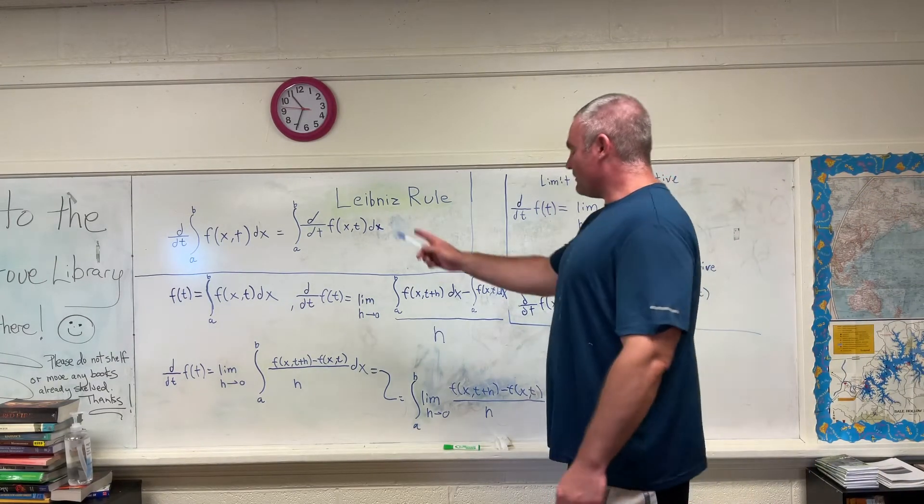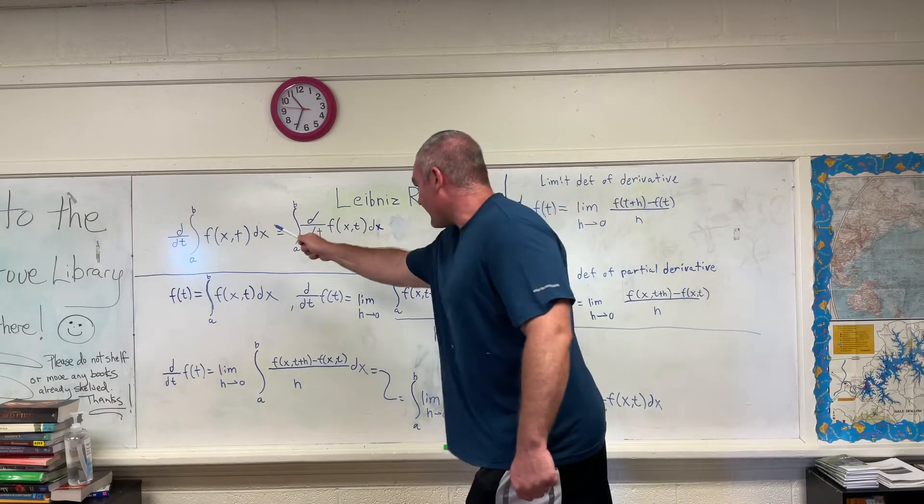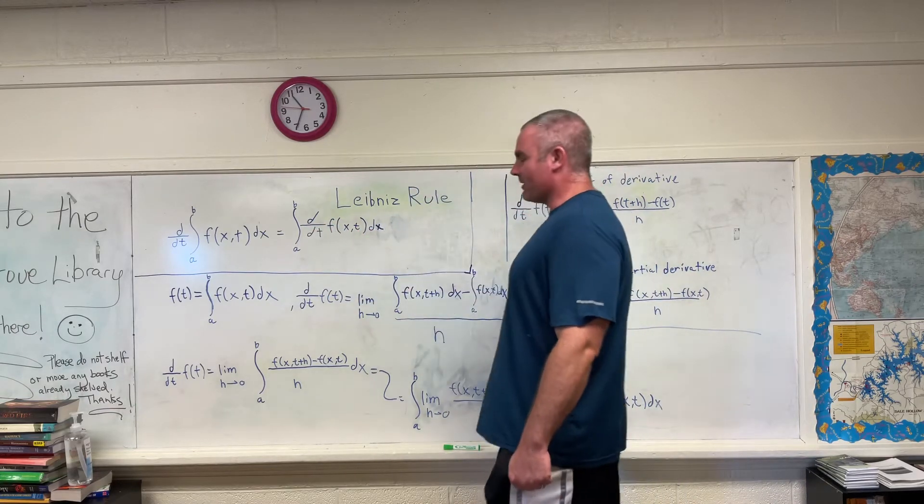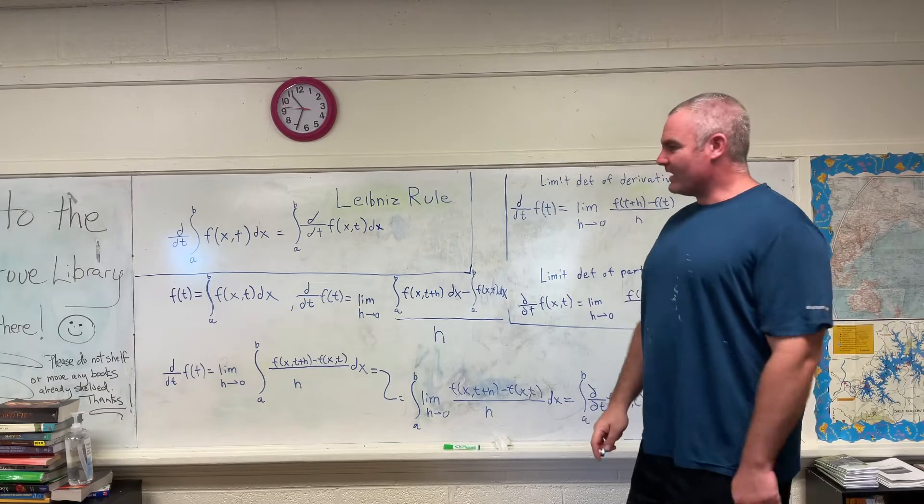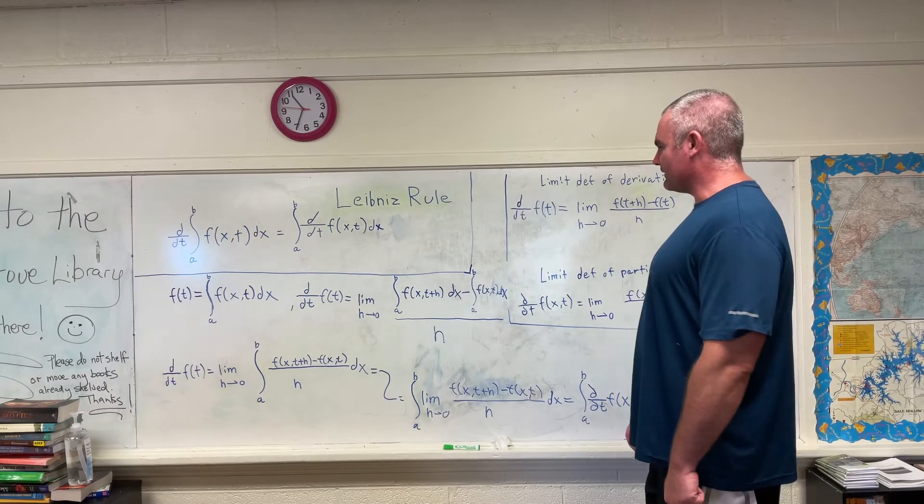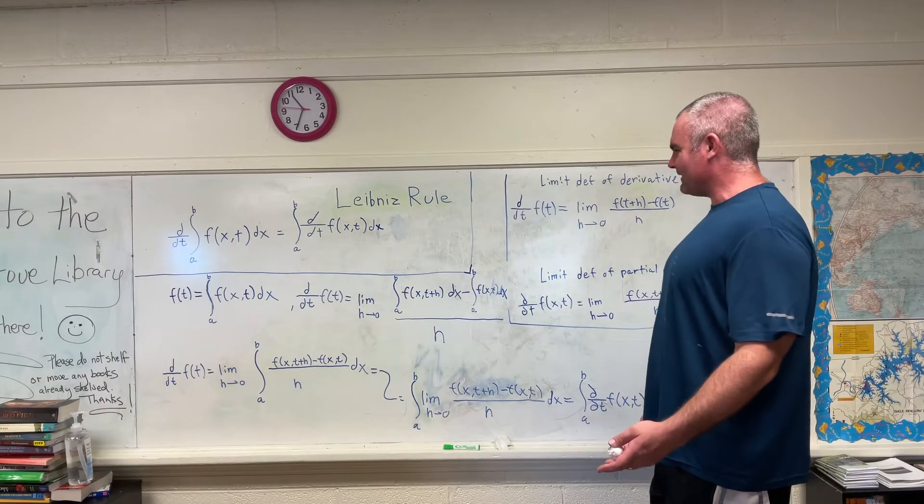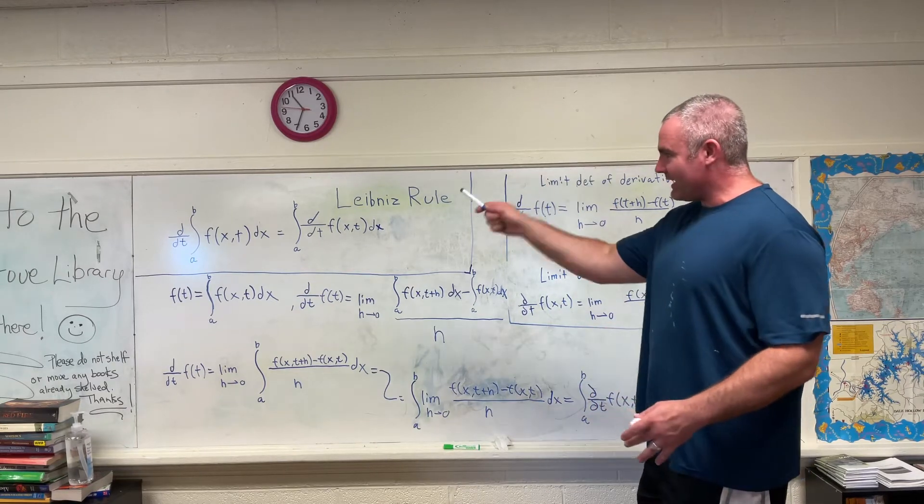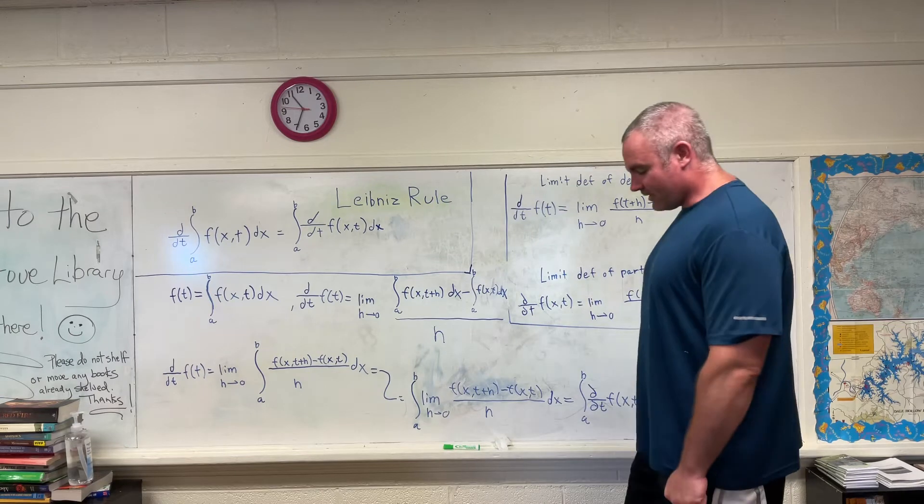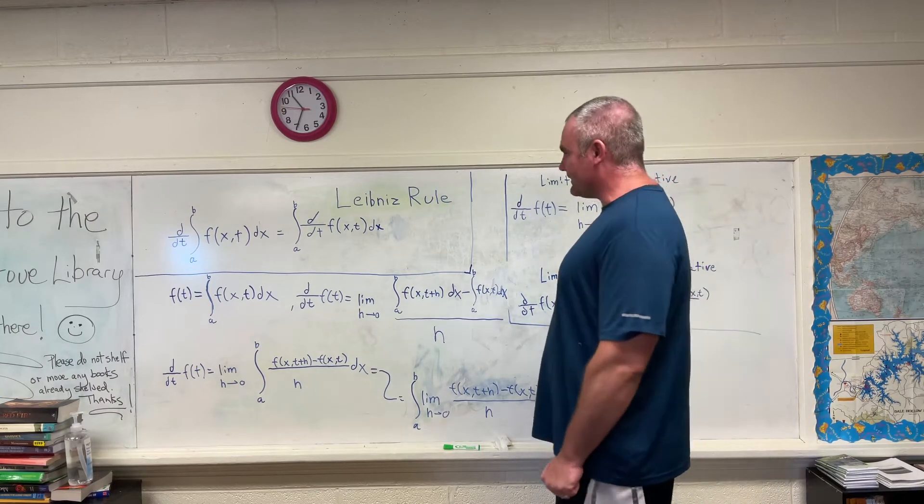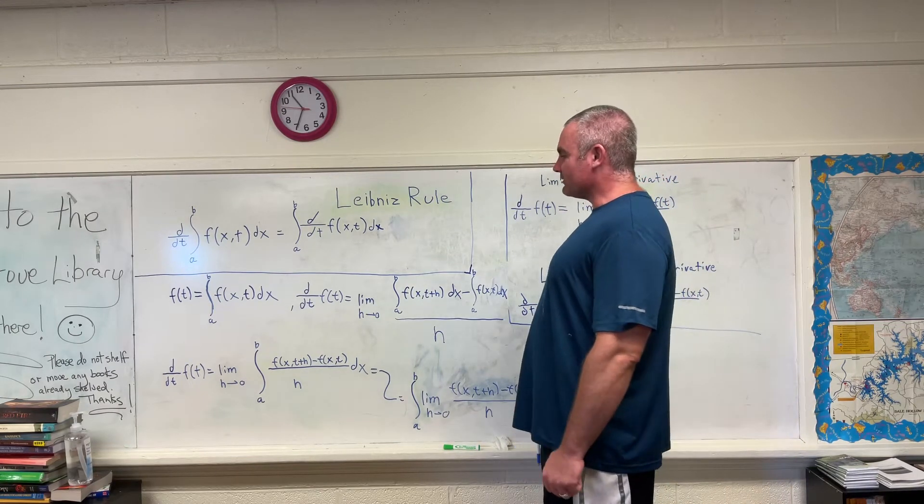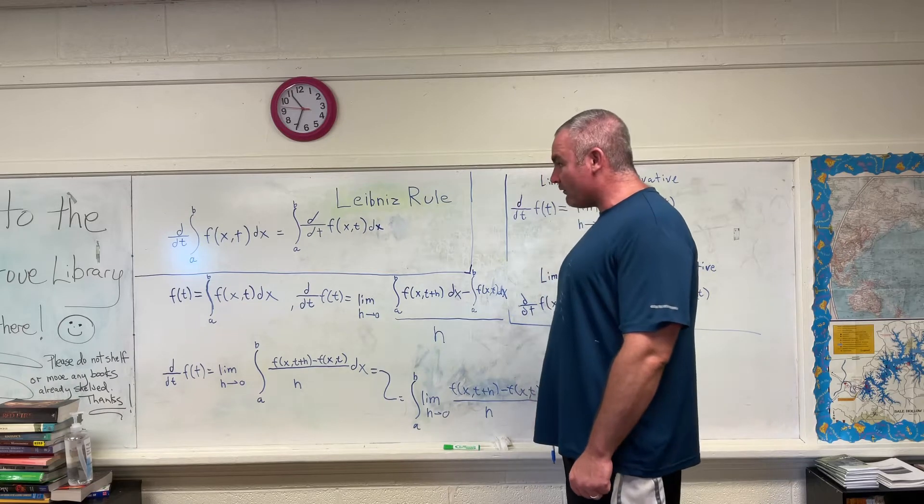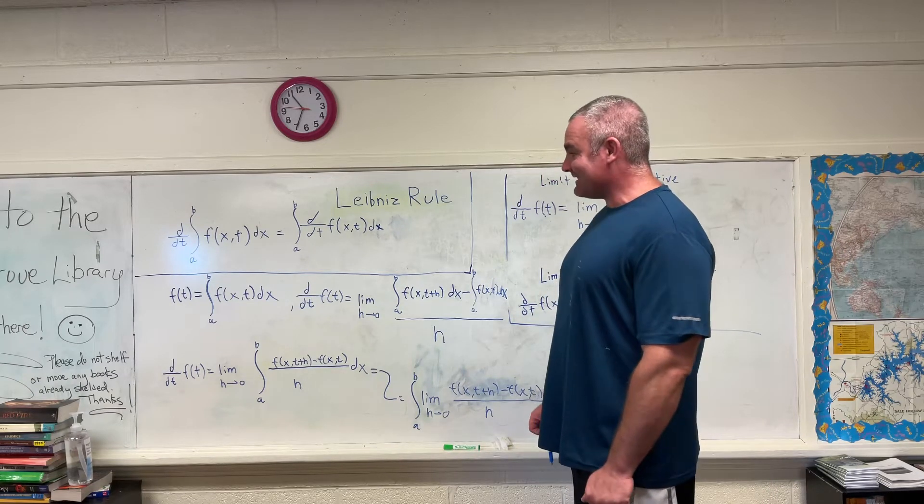So I'm going to show you how to get from there to there, which is something I really had a hard time finding online. I had a hard time finding a good just simple quick explanation of how you get from there to there. Anyway, so we're going to start off with a function of t. That function of t is equal to the integral from a to b of a function of x and t integrated with respect to x.